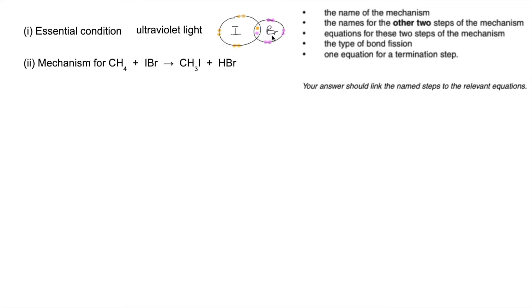Okay, so the first thing, the name of the mechanism, obviously radical substitution, so that ticks that one off. The names of the other two steps of the mechanism, so the first one is the initiation step. We were told about the termination step.